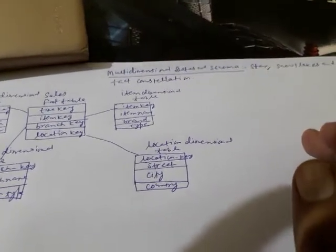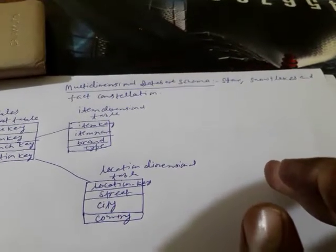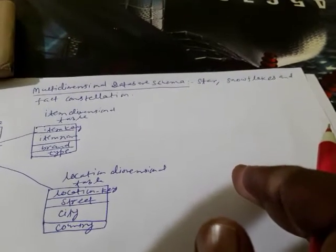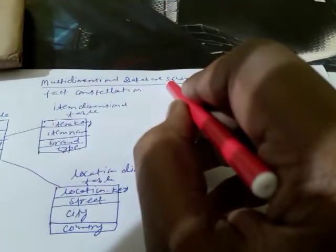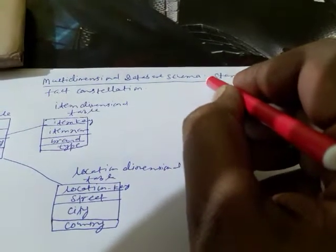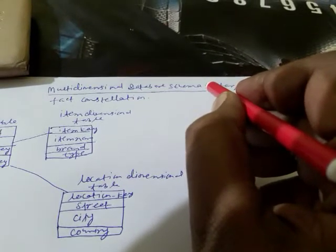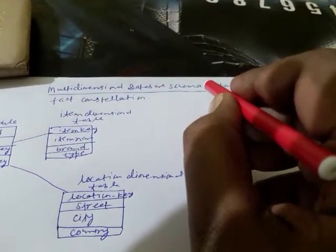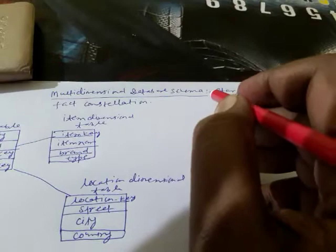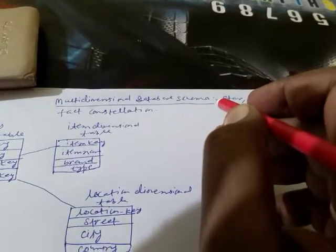In this video we are going to learn about the multidimensional database schema, which is the combination of the star, snowflake, and fact constellation schemas. We can use the multidimensional database schema for the data warehouse and OLAP. In case of the ER diagram, we use the relational model to perform relations between attributes, but when entities have complex relations with each other, that model is not suitable for online data processing.